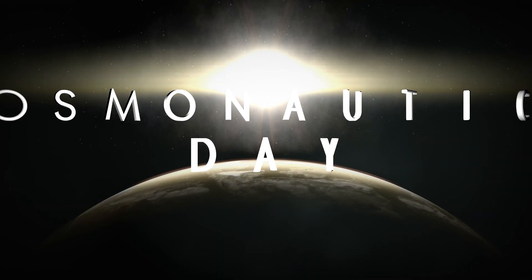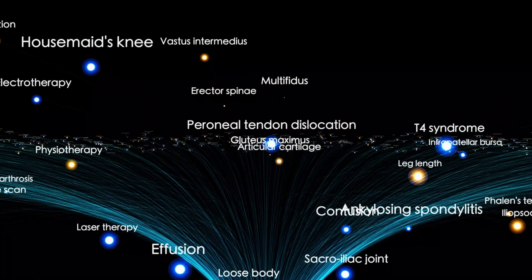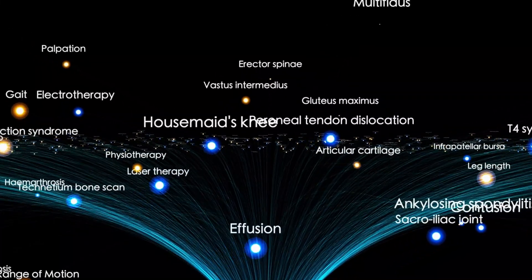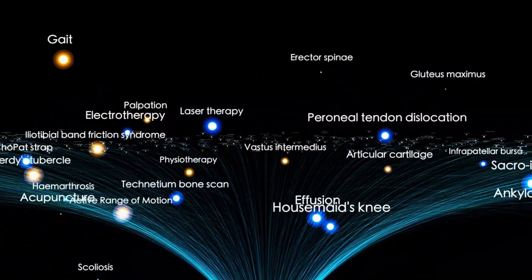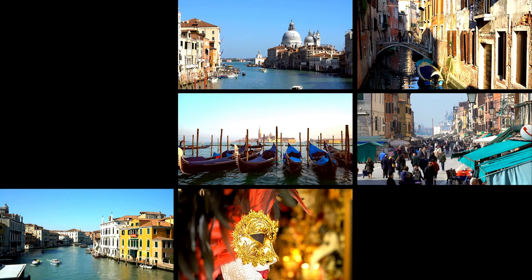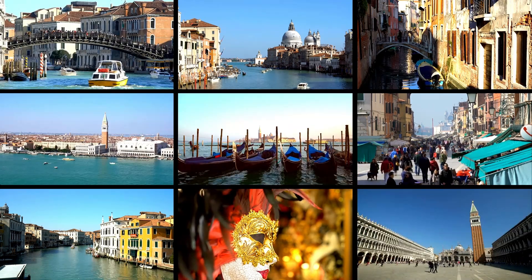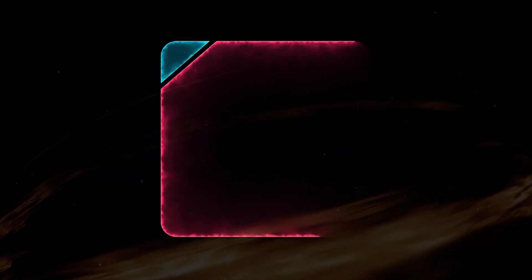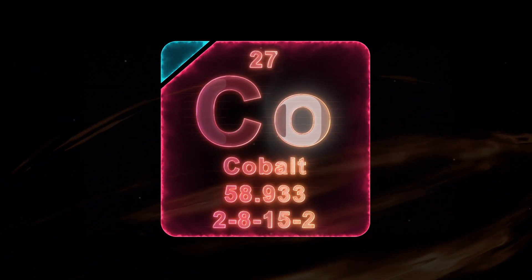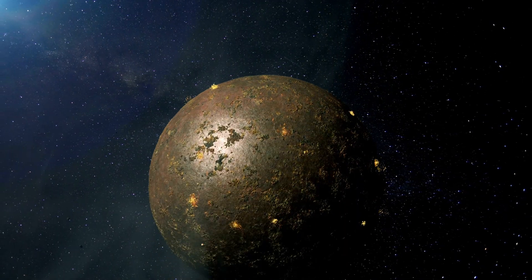In Betelgeuse's case, the light reaching us today started its journey over six centuries ago. This makes for a fascinating puzzle, because the things we see happening in the night sky actually occurred many centuries ago. The light we currently perceive from Betelgeuse embarked on its journey toward Earth during the time of the Renaissance era. With each observation of Betelgeuse, we are essentially exploring a cosmic time capsule.